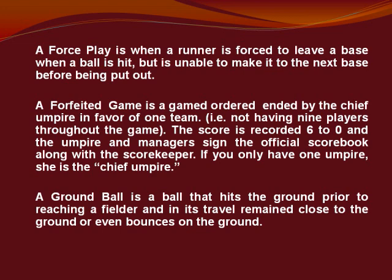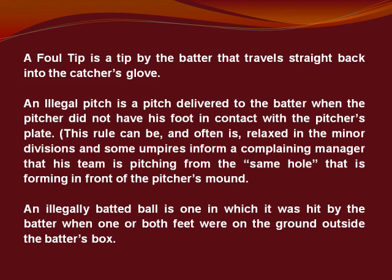A ground ball is a ball that hits the ground prior to reaching a fielder and, in its travel, remains close to the ground or even bounces on the ground. A foul tip is a tip of the ball by the batter that travels straight back into the catcher's glove. An illegal pitch is a pitch delivered to the batter when the pitcher did not have his foot in contact with the pitcher's plate. This rule can be, and often is, relaxed in the minor divisions, with some umpires noting that both teams are pitching from the same hole forming in front of the pitcher's mound.